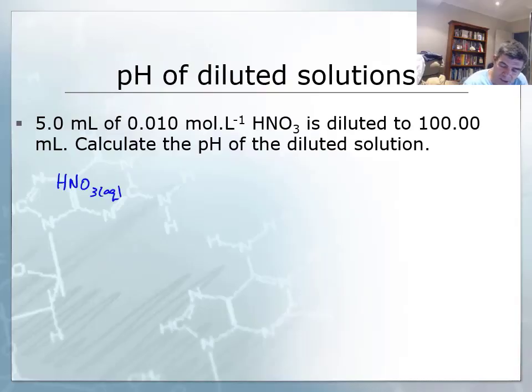We know that the initial volume of the solution is 5 mL. I'm going to convert that to 0.005 liters, because if I'm looking at concentrations in moles per liter, I need to use liters for consistency. The initial concentration is 0.01 moles per liter.